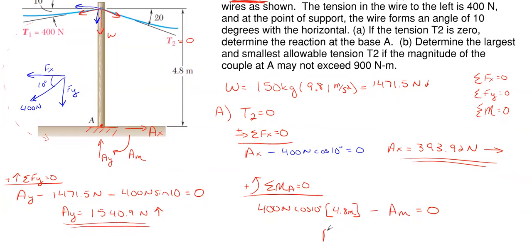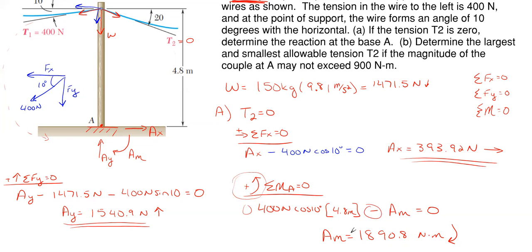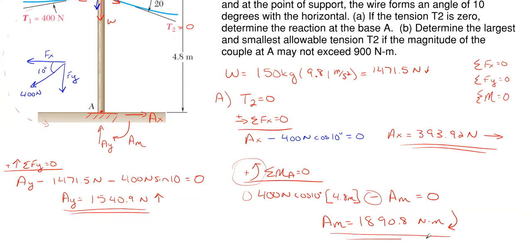A sub m is the only unknown, so rearranging and solving gives A sub m = 1890.8 newton meters. It came out positive, confirming the assumed clockwise direction was correct. That is the final reaction for Part A.